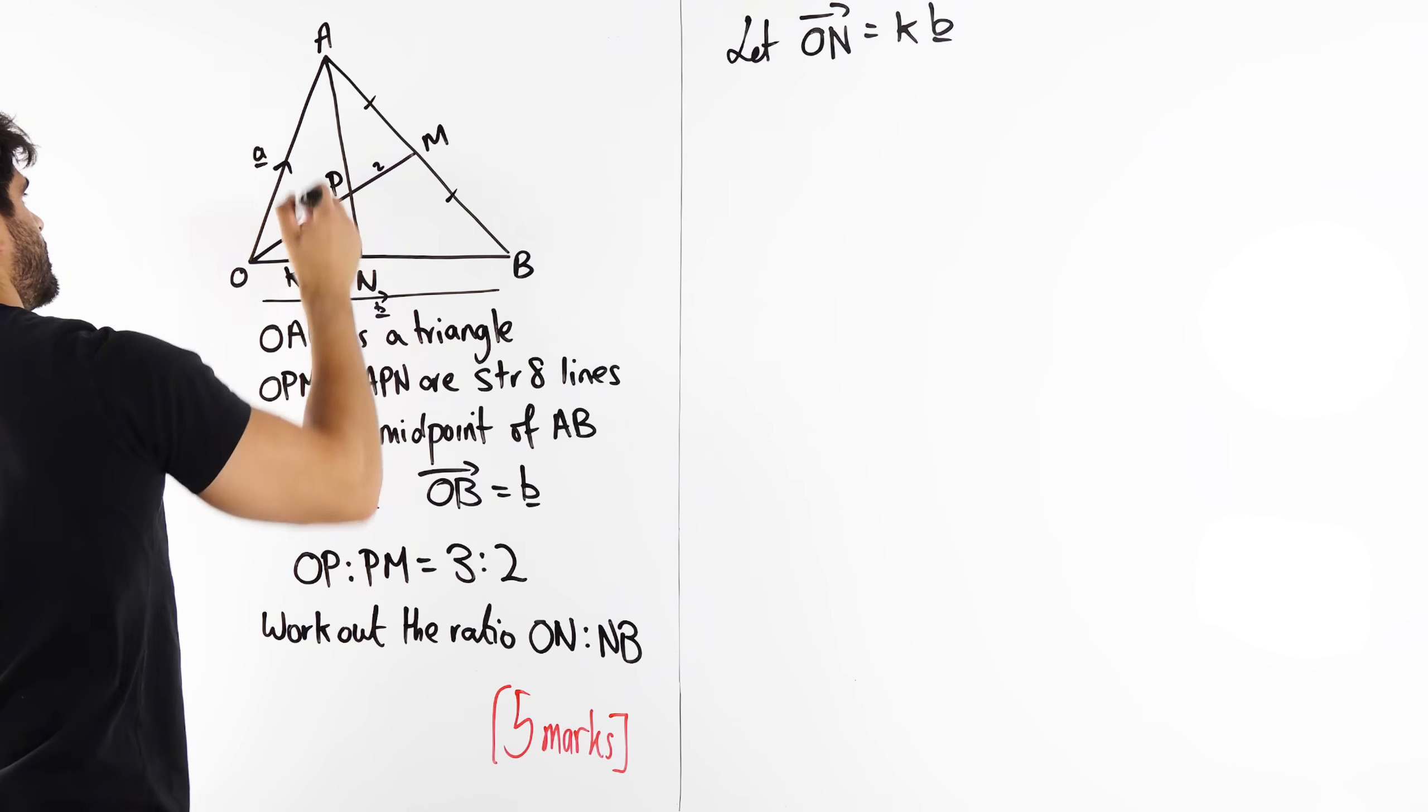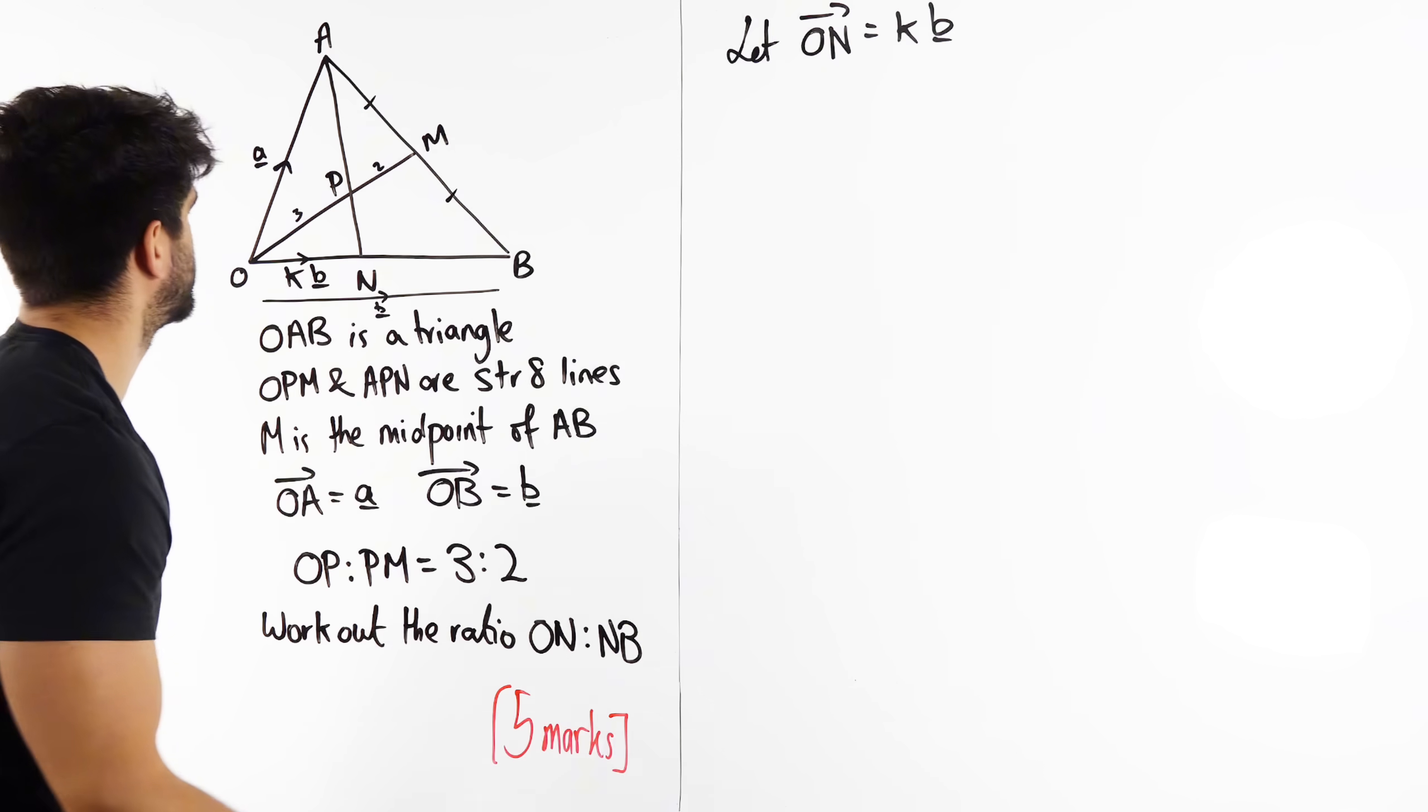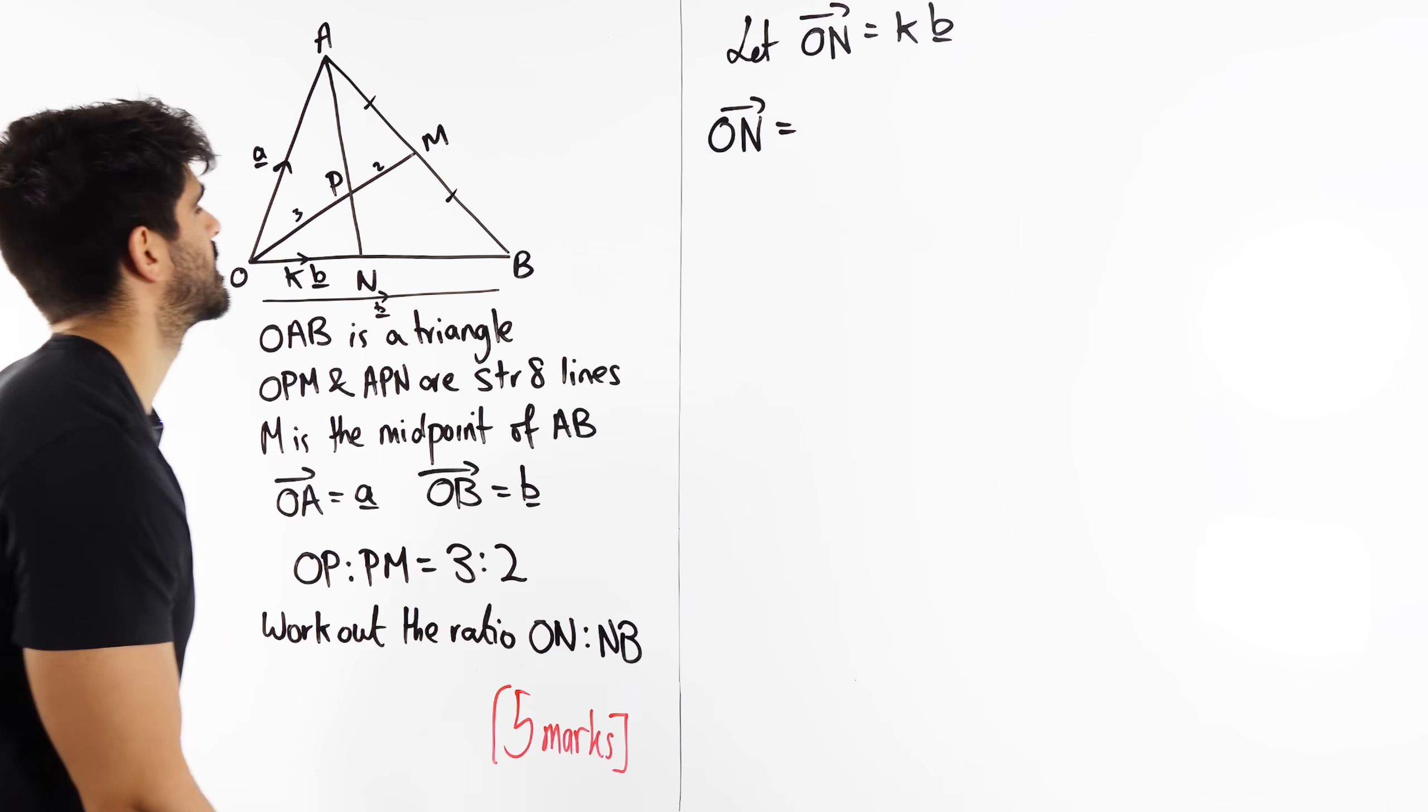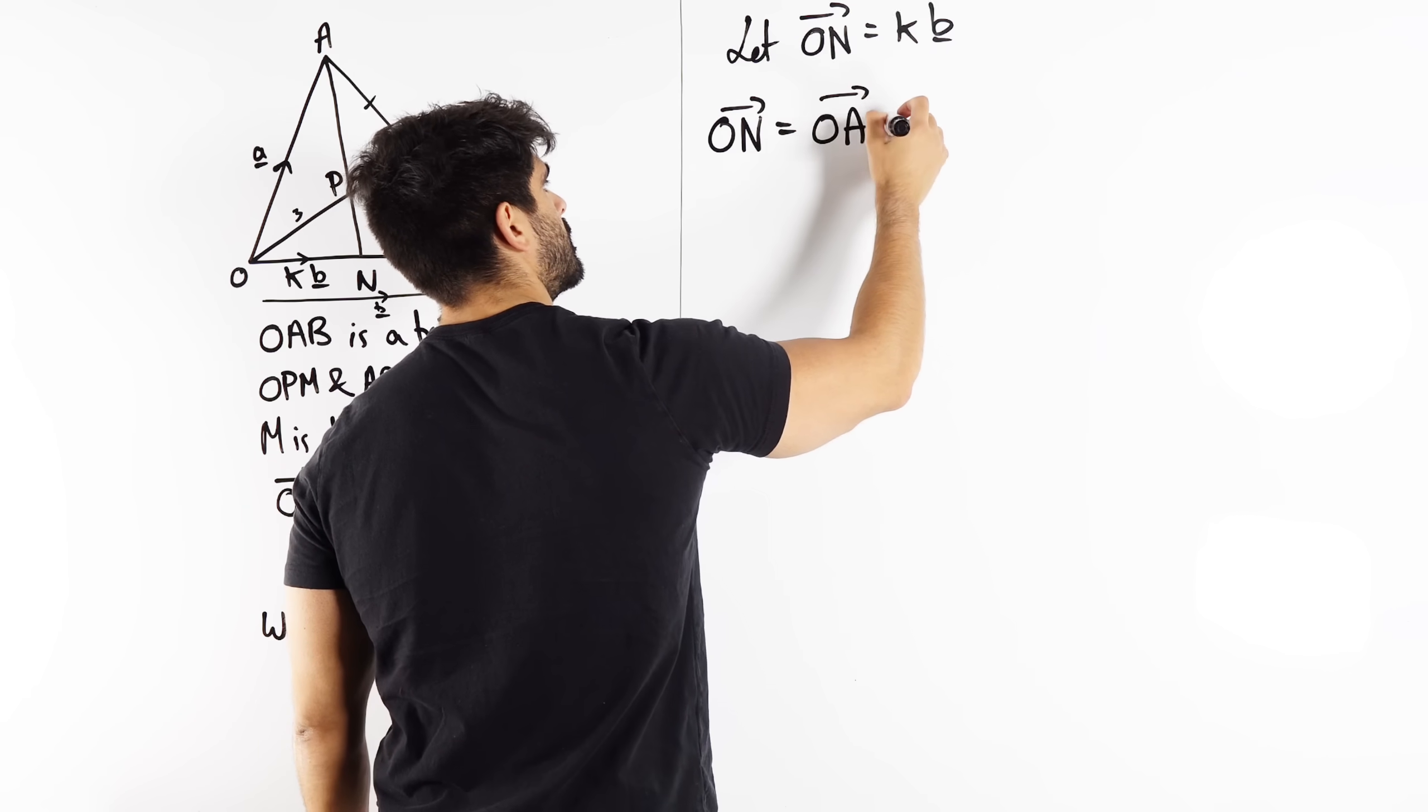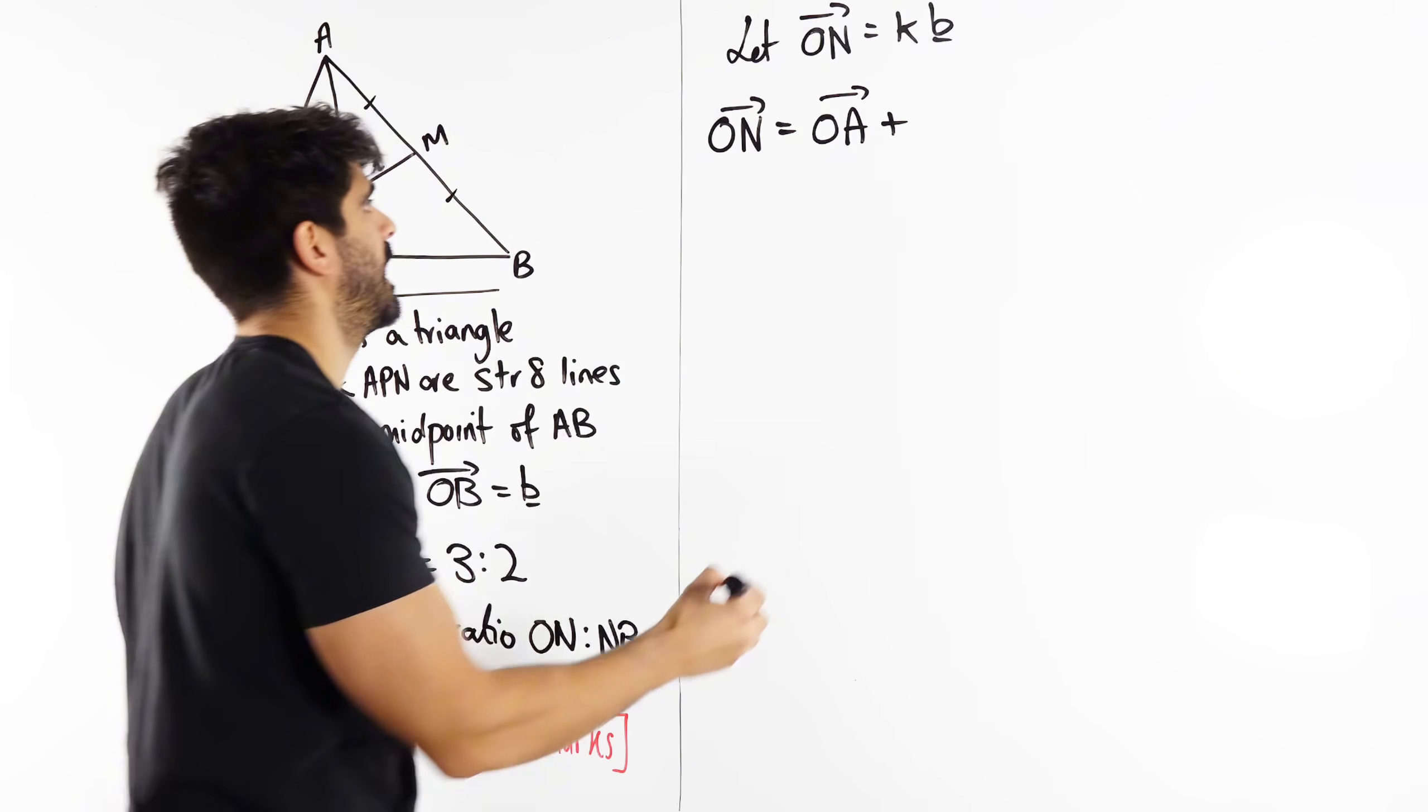So this vector here is A. So to go from O to N, what do I need to do? To go from O to N, what I'm going to do is I'm going to go from O to A, and then I'm going to go AN.